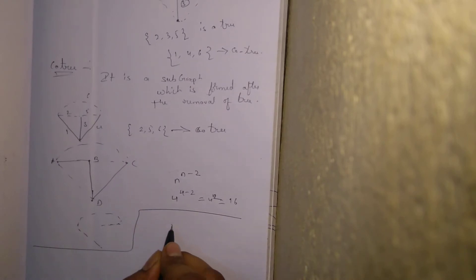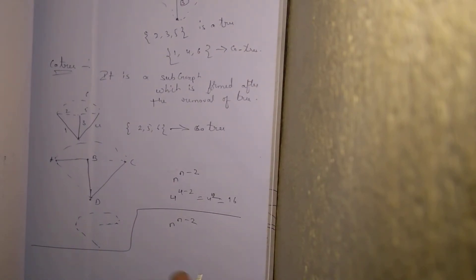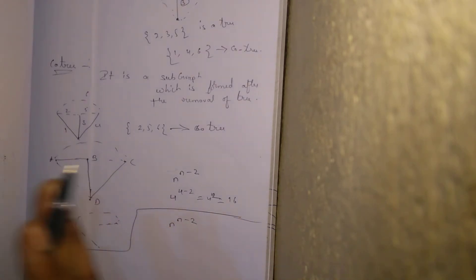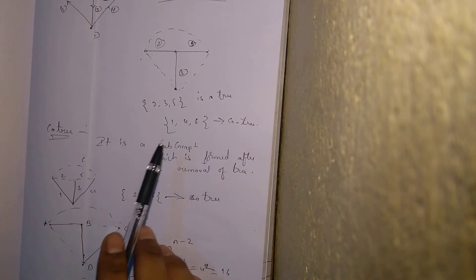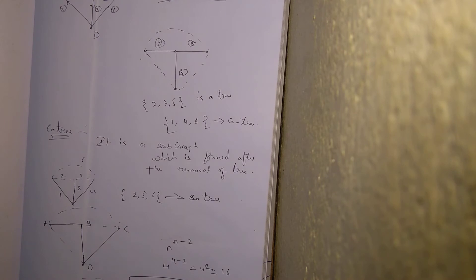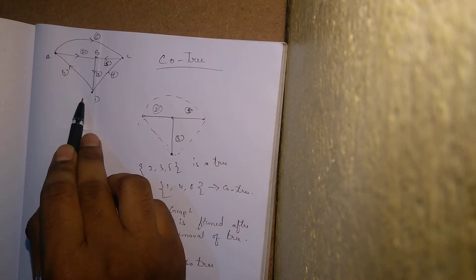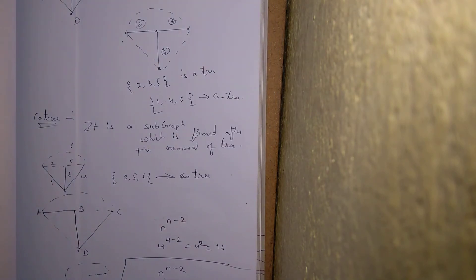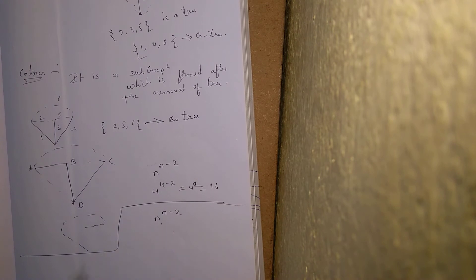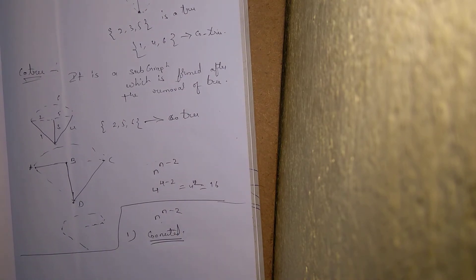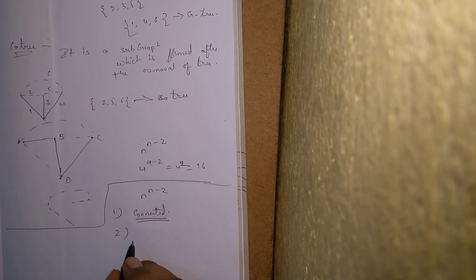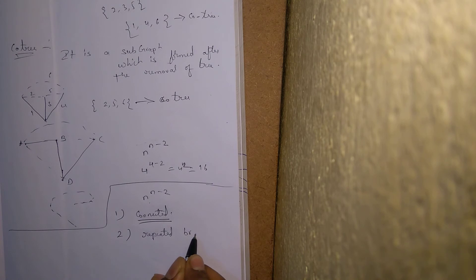The number of possible trees or co-trees is n^(n-2). But is this expression valid for all cases? Absolutely not. In order to use this expression, two conditions must be satisfied. Condition one: the graph should be connected — that means access from one node to any other node. Condition two: there should not be any repeated branches.